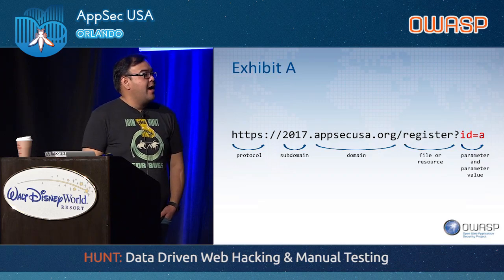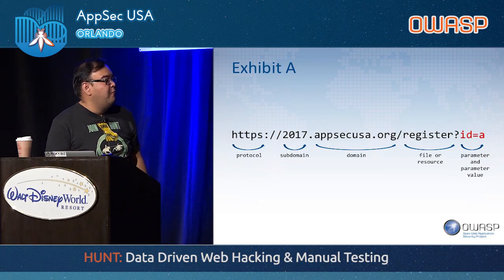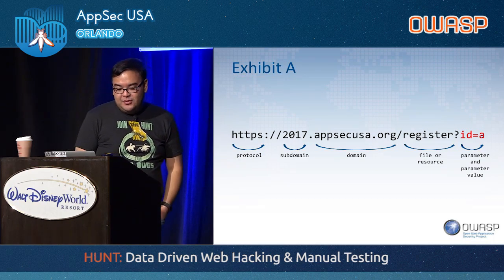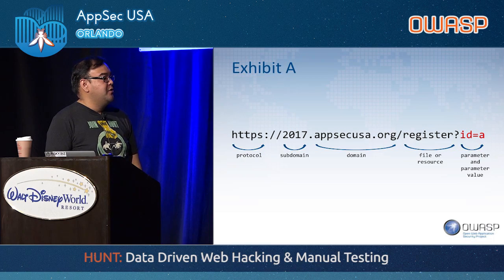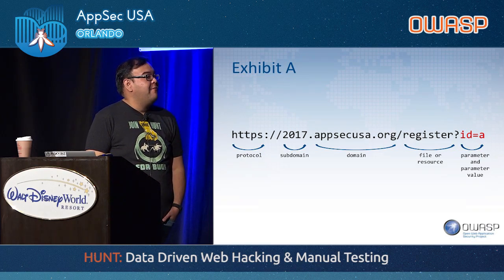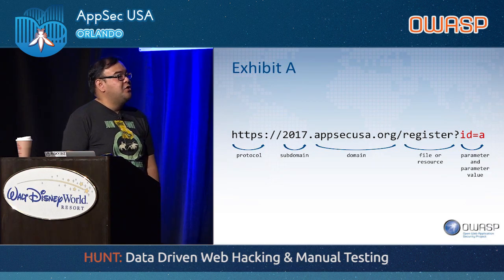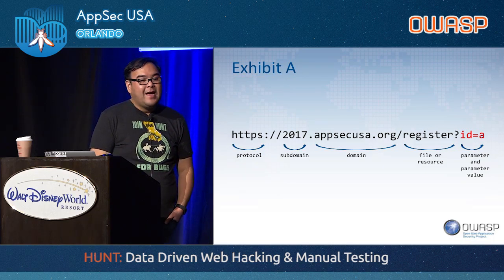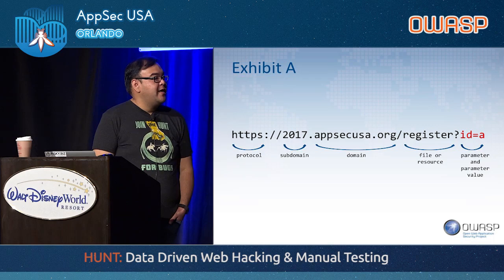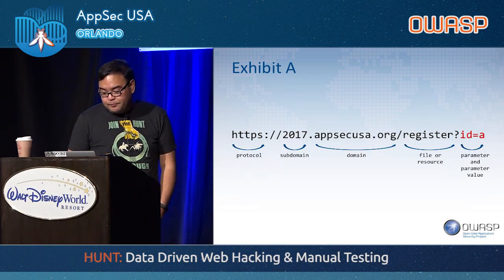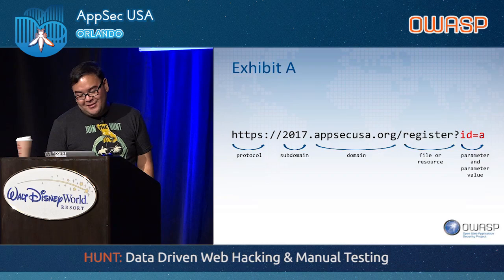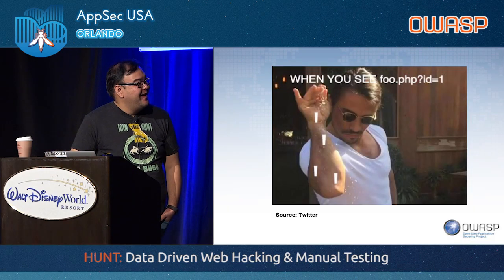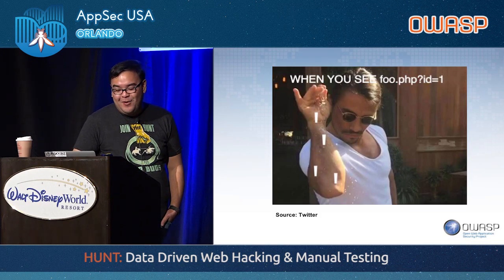Let's talk about the composition of a URL. Very simply, it's composed of a protocol, a subdomain, a domain name plus the top-level domain, and then there might be a file or resource at the end. But the juicy piece is going to be the parameter and the parameter value — that's what we took from our dataset. If you're a seasoned pen tester and you've seen a parameter like 'ID', you already know what to do. This is literally me when I see 'ID equals' — I just sprinkle all those single ticks to see if I can pop a SQL injection.